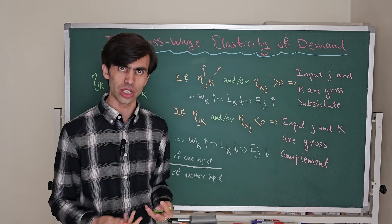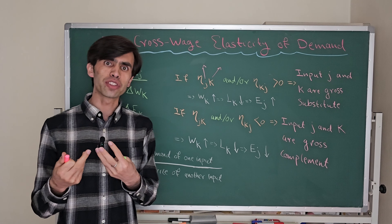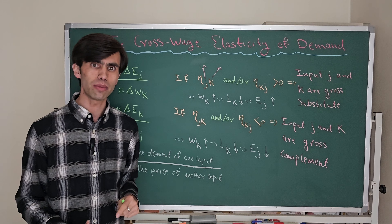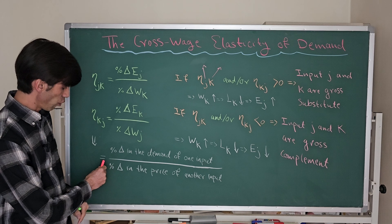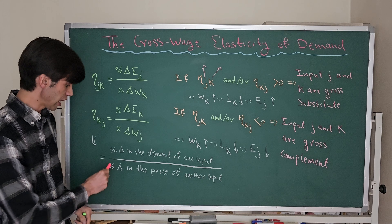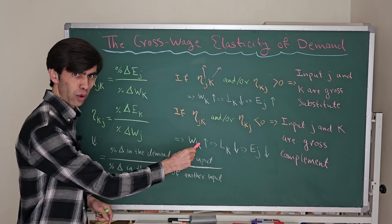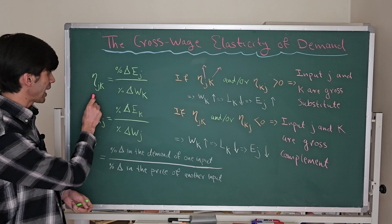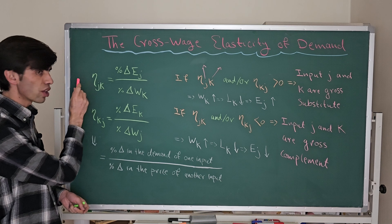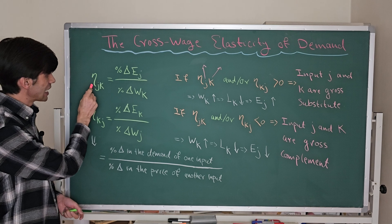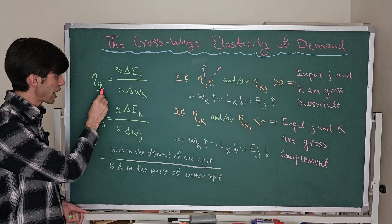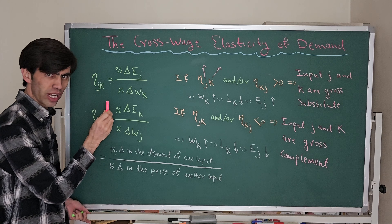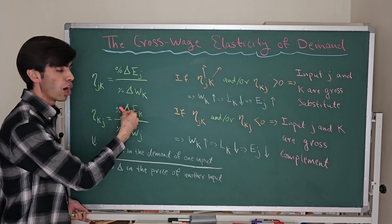In terms of the mathematical formula, the cross-wage elasticity is equal to the percentage change in the demand of one input — for example, one specific type of labor — divided by the percentage change in the price of another input. If we denote the wage elasticity with eta (the Greek letter), then the elasticity of input J with respect to the wage or price level of input K equals the percentage change in the employment level of input J divided by the percentage change in the wage level of input K.